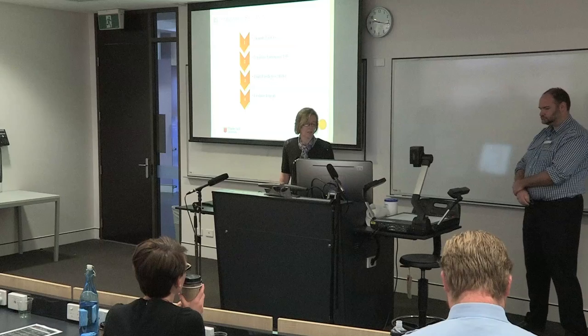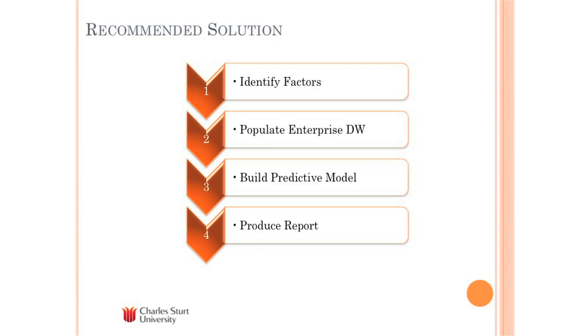The idea of the project was that if we can identify the students most at risk of leaving, then the support team could focus their strategies to help these students. We broadly outlined the solution in four steps: first, redo the data mining analysis to identify exactly the factors we needed; second, populate the data warehouse on a regular basis with the data required to assess those factors; third, build a predictive model; and fourth, produce a report that allowed the support team to go ahead and help the students.